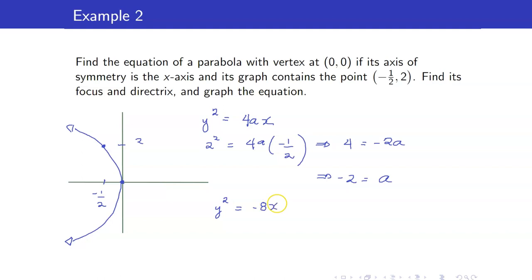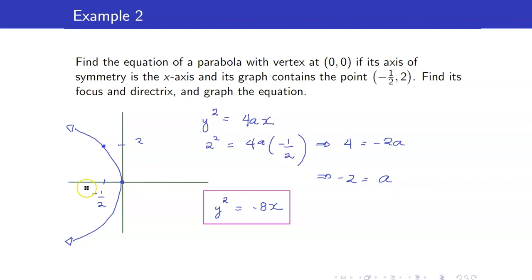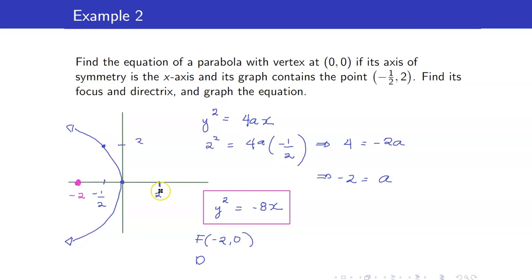The equation of the parabola is y squared equals 4 times negative 2, that's negative 8x. This problem also asks for the focus and directrix. The focus is inside your parabola and always equal to the absolute value of a units away from the vertex. Since our a is negative 2, our focus is the point (negative 2, 0). The directrix is the absolute value of a units away from the vertex.